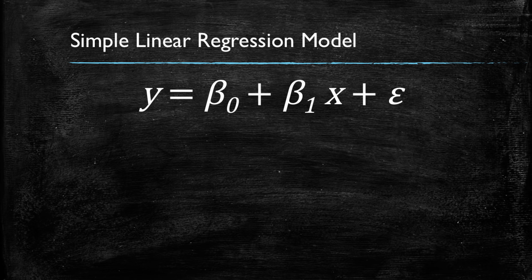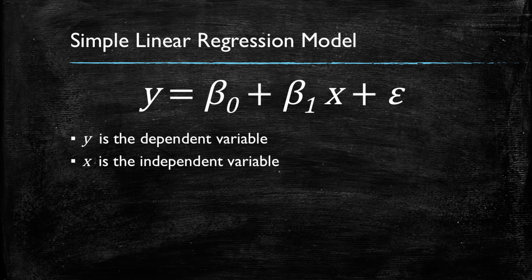Y is the dependent variable, the variable whose value depends on all other parameters in the equation. X is the independent variable that helps explain the variance in the y.